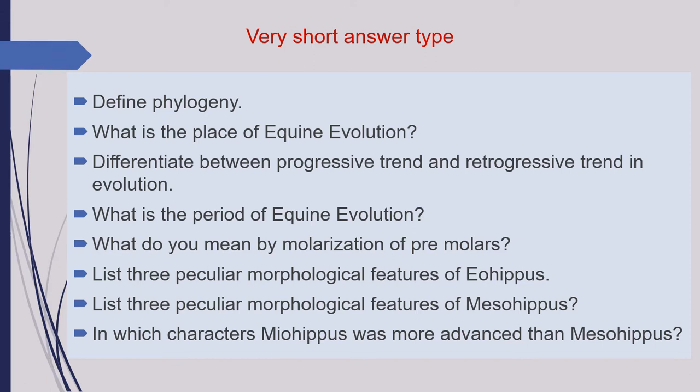Second question is: what is the place of equine evolution? Third question is: differentiate between progressive trend and retrogressive trend in evolution. Next question is: what is the period of equine evolution?